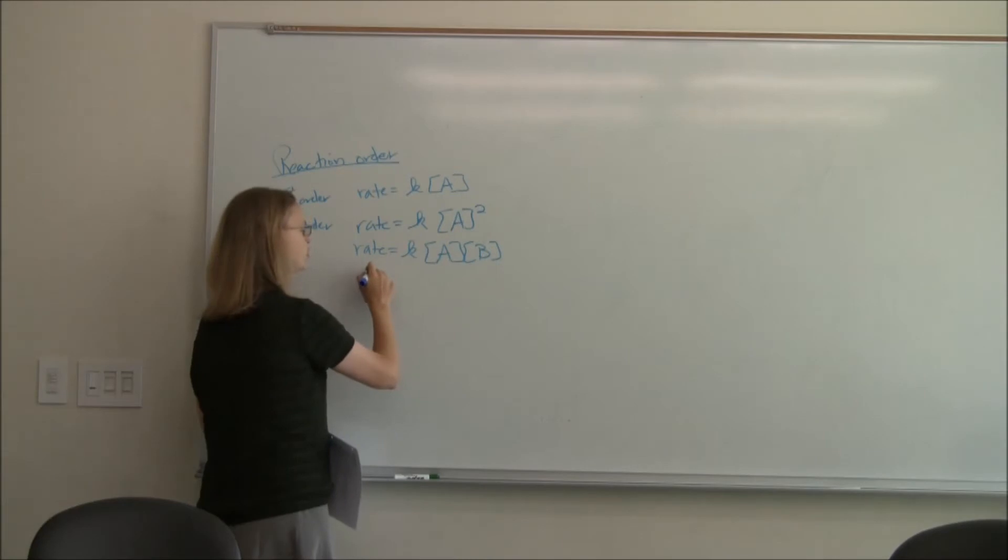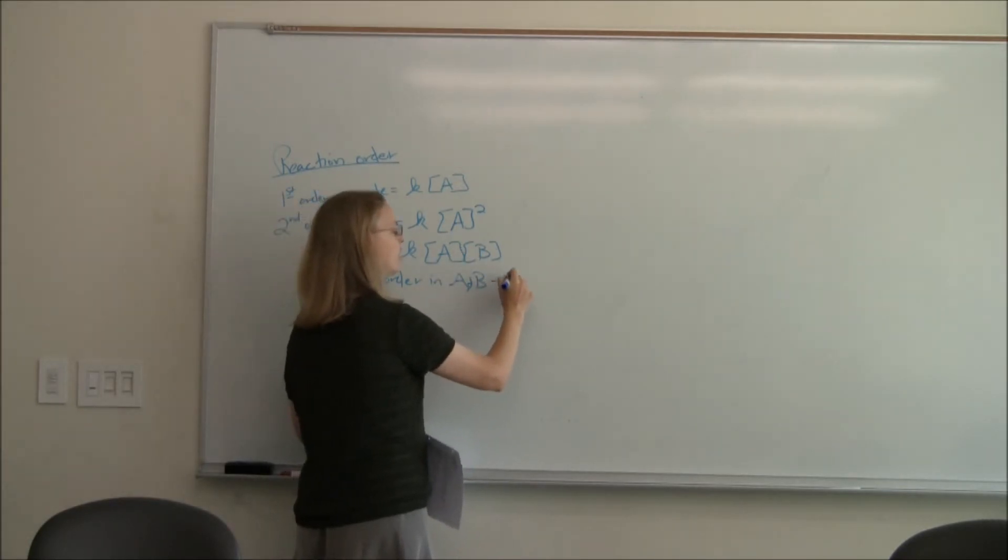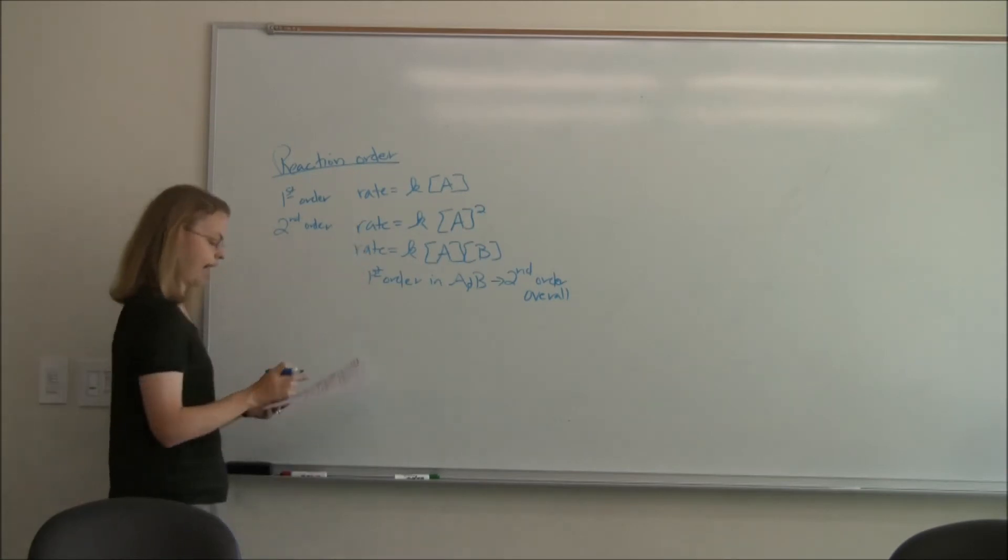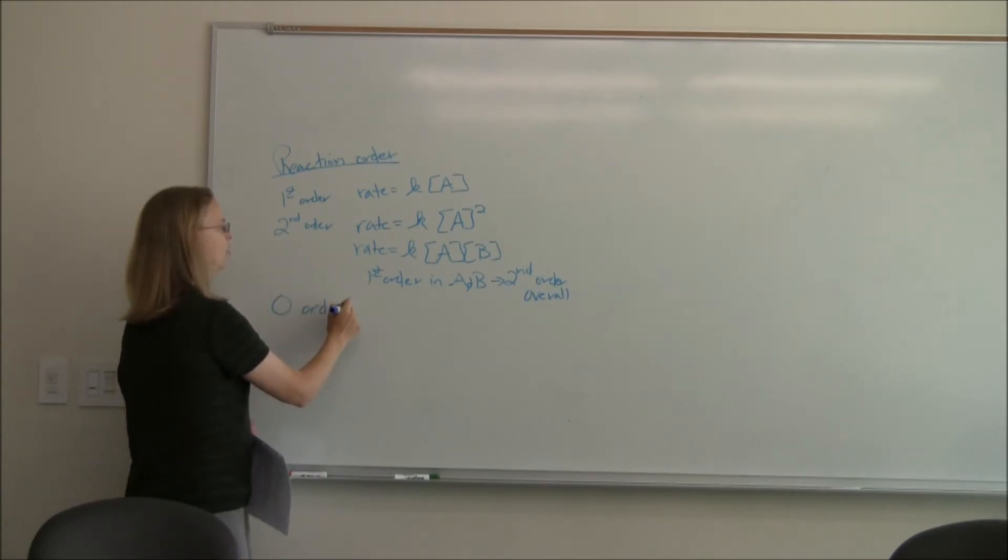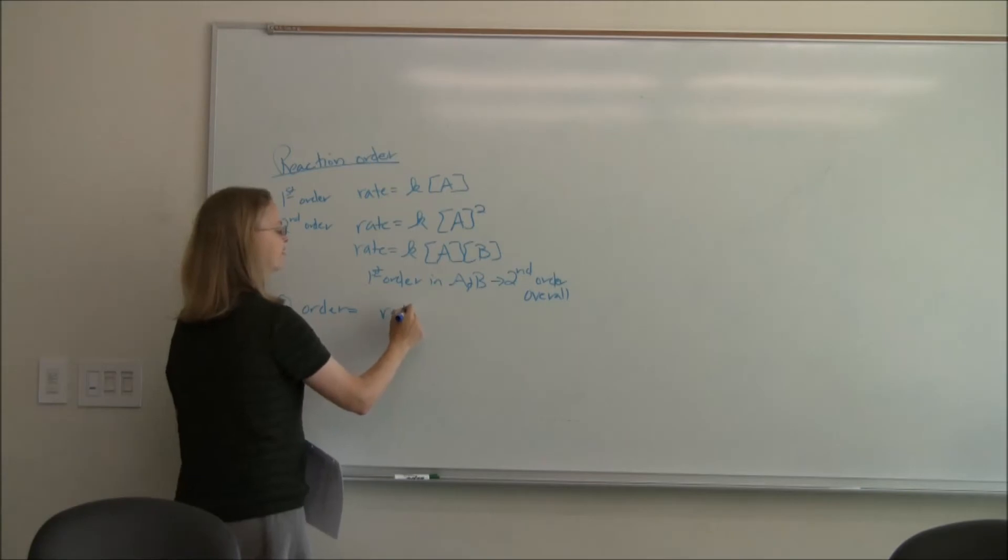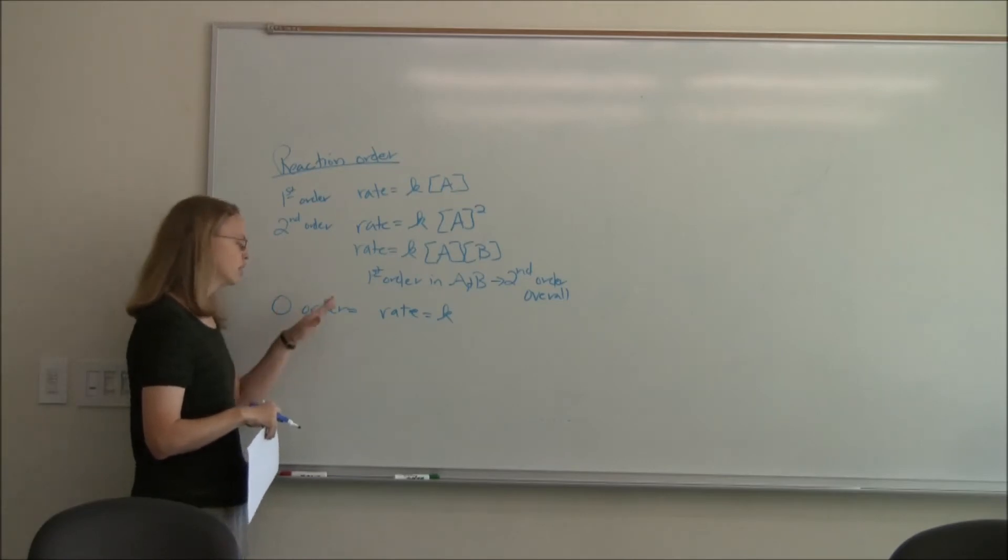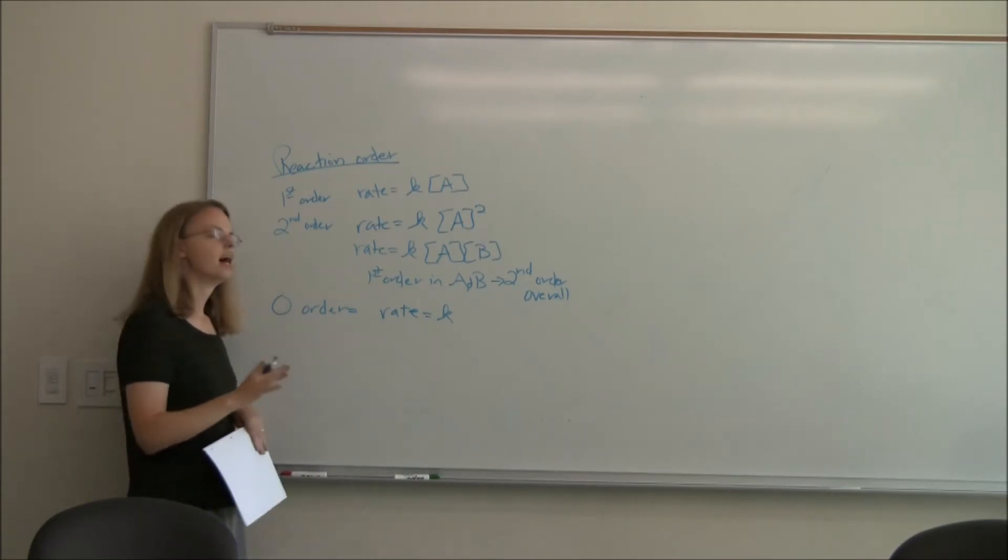K is equal to A times B. Now, these are first order in A and B, because each of these is just to the 1, but it's second order overall. Meaning it depends on two concentrations. So it could be this or it could be that. There actually can be a zero order as well. And so the rate is constant. It doesn't depend on the concentration of anything. And so you can get zero order. And you can get third and fourth and fifth order. We just won't do all of those today. But these are kind of common rate expressions.